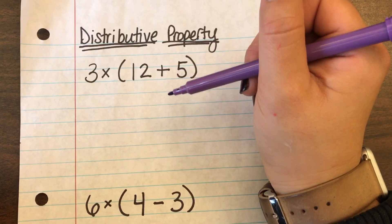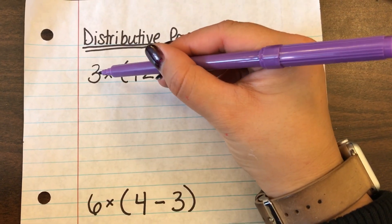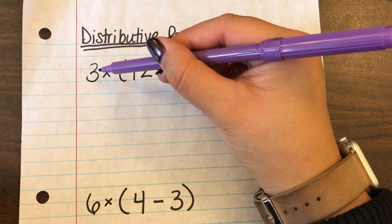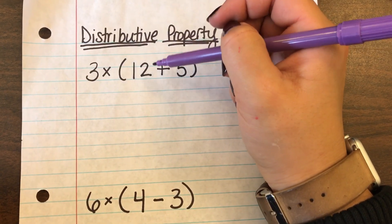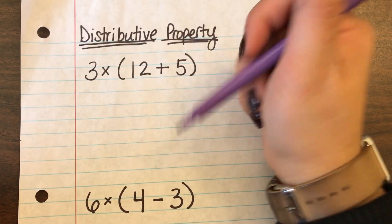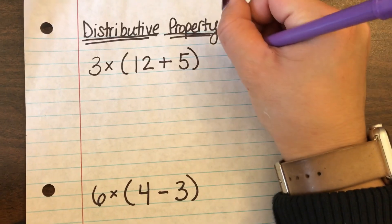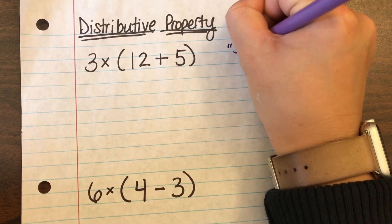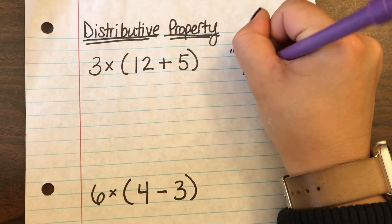So what the distributive property asks you to do is to take this number that's on the outside of the parentheses and you're going to multiply it by every number that's on the inside of the parentheses. And how I like to remember that is say hi multiply.